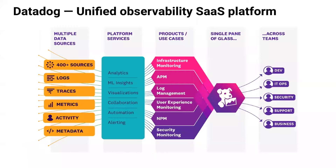DataDog provides a unified software-as-a-service observability platform that addresses the unique challenges of modern software applications. We collect all types of observability data and make them available in a single application, including metrics, traces, logs, user activity, database monitoring, and we've got over 500 pre-built integrations. With DataDog, your teams have a single source of truth so they don't need to switch context when troubleshooting issues.